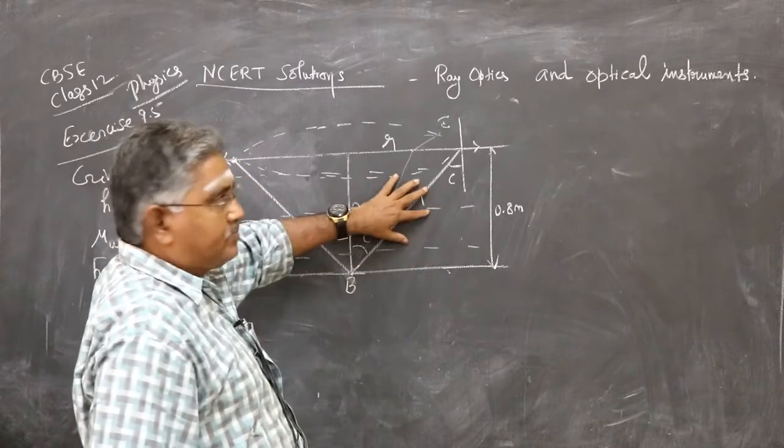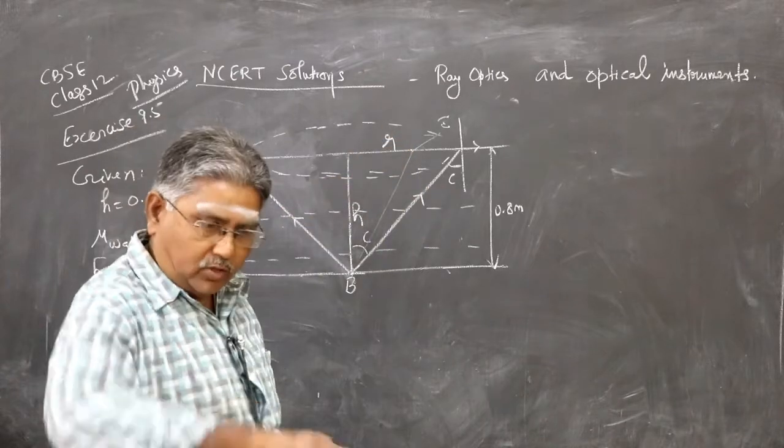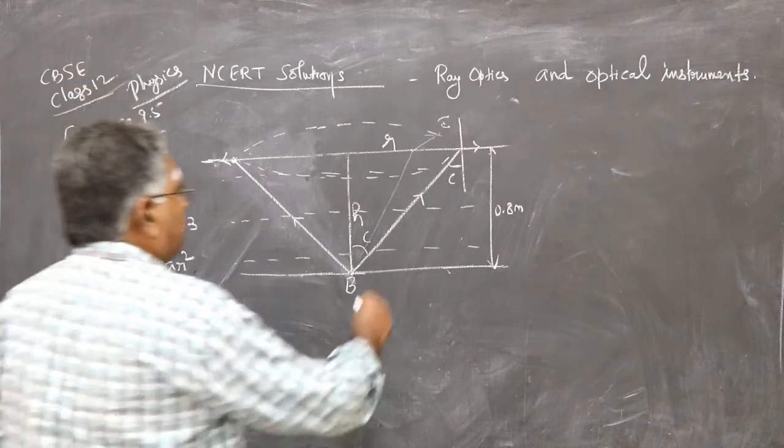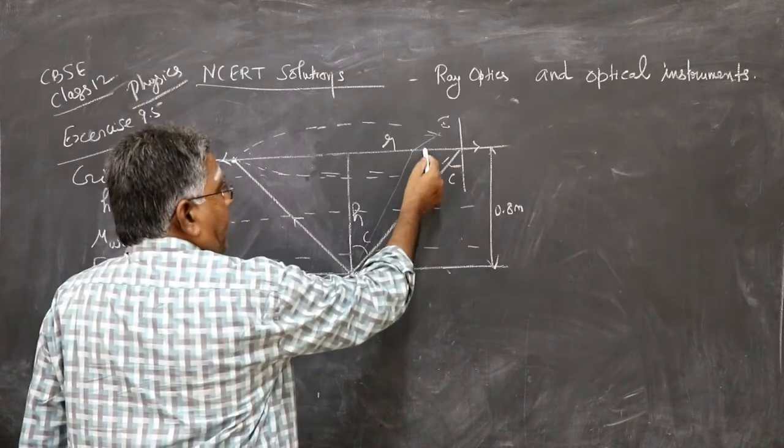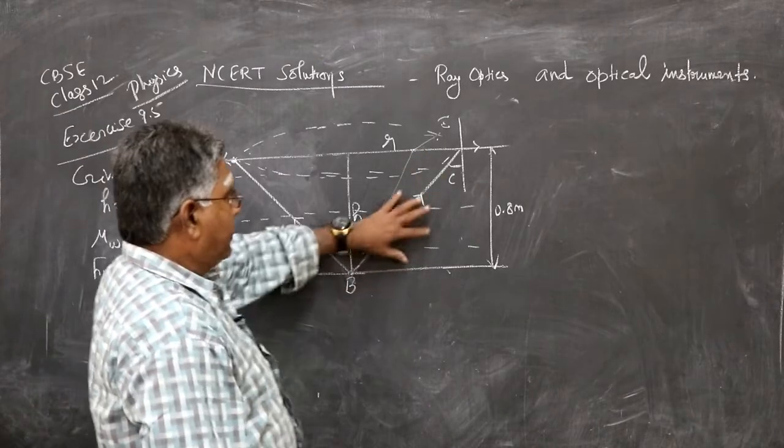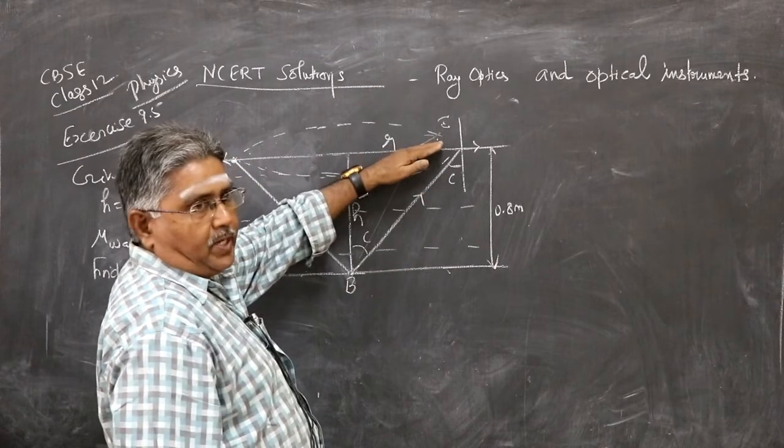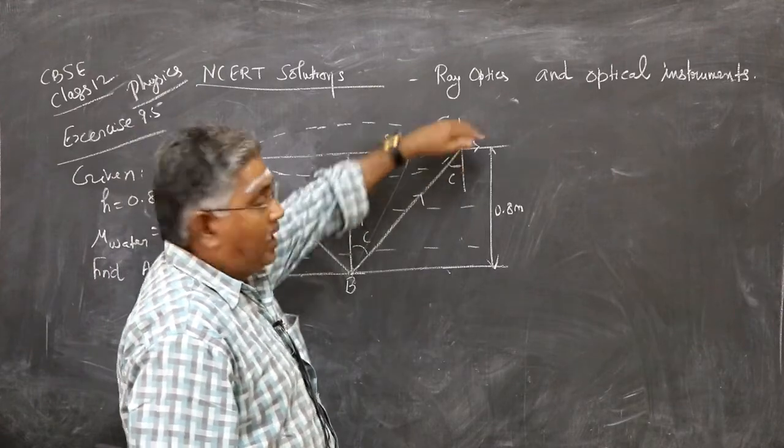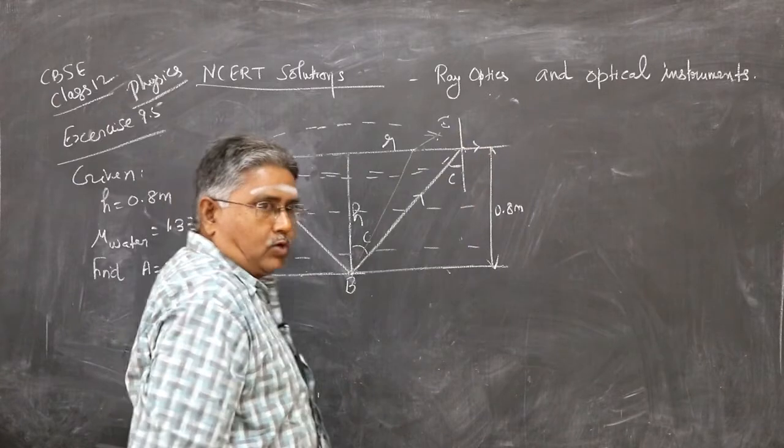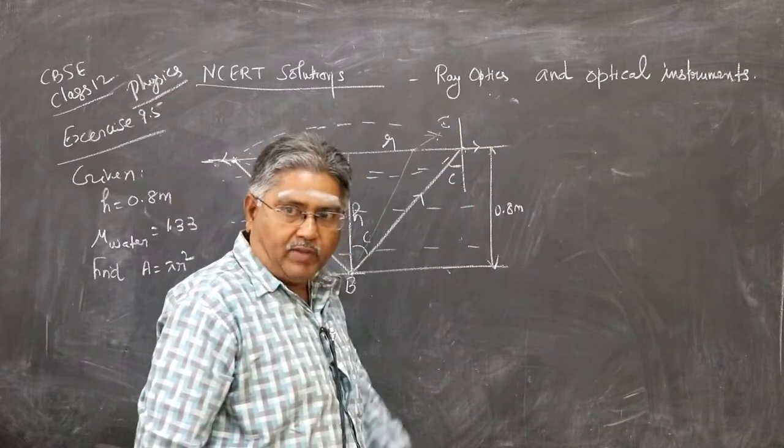Let's consider any one side, find R, then the full circle will be pi R squared. Now you can see any ray here, it will undergo refraction. It goes from denser to rarer, deviates away from the normal.